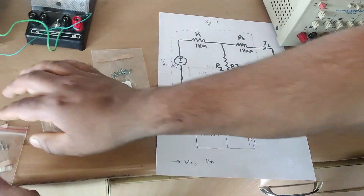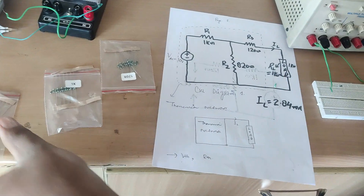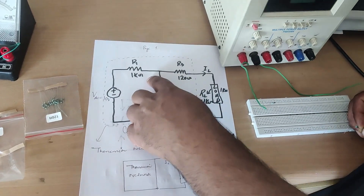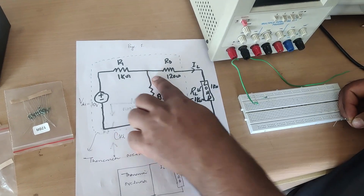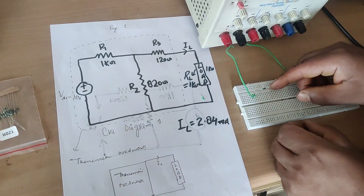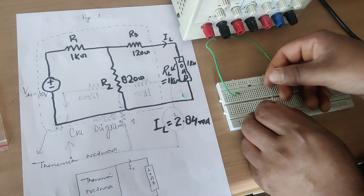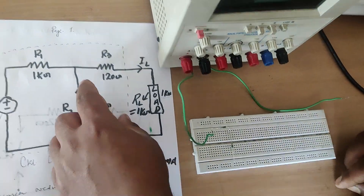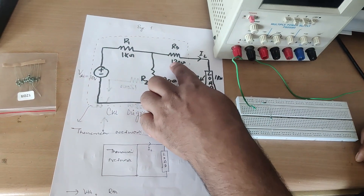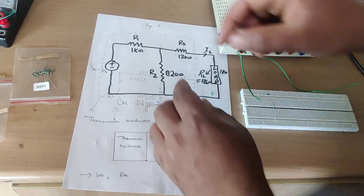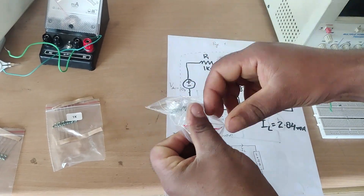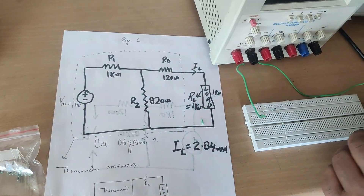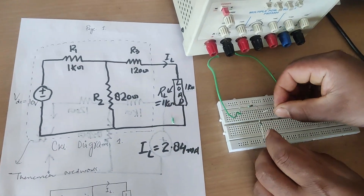Next I am connecting the 820 ohm resistance. You can see this is the 820 ohm resistor. The other end of the 1 kilo ohm is connected with this 820 ohm resistor. After that, the 120 ohm resistor is connected at the same junction, so I am connecting the 120 ohm resistance here.